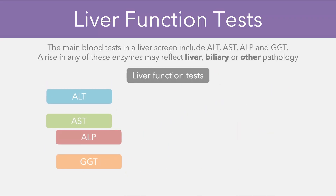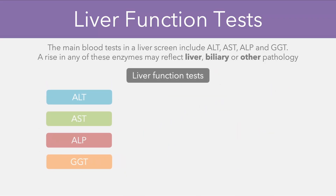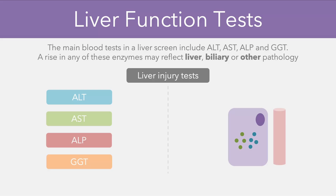Before we take a look at these processes in more detail, it's worth noting that the name liver function tests is actually a bit of a misnomer. They should really be called liver injury tests, because the cells which contain these enzymes are only going to release them if there's some form of injury — and this could be via infections, toxins, autoimmune conditions, or cancers.